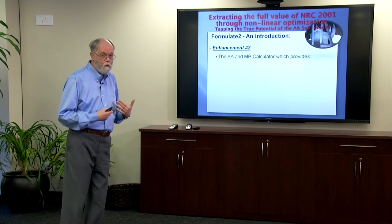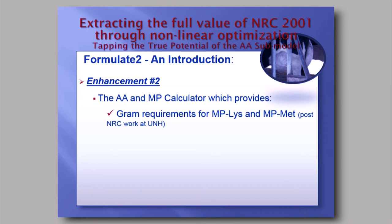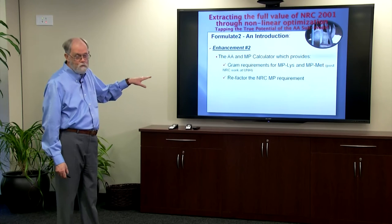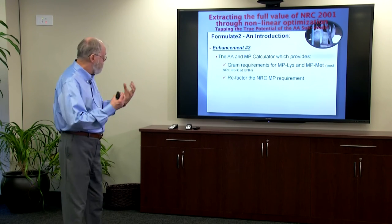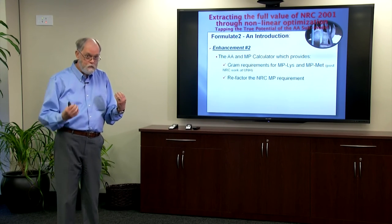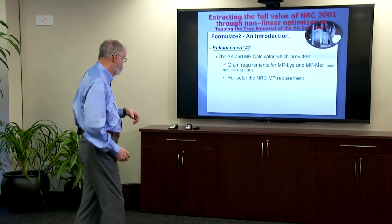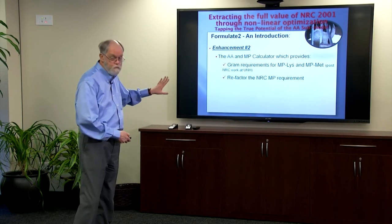Enhancement number two is what we call the amino acid and MP calculator. The calculator provides gram requirements for lysine and methionine — not percentages of MP, but gram requirements — based on post-NRC work done at the University of New Hampshire in 2003 and 2004. Because we have gram requirements, the calculator gives us the ability to refactor the NRC metabolizable protein requirement, and move total metabolizable protein up and down wherever we need to.